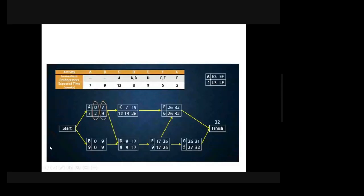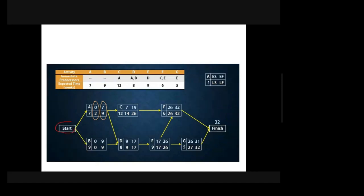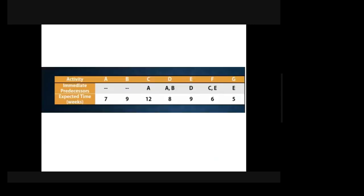These network diagrams look something like this. Here you can see each of them has a start point, there is a node, and this node has various attributes. These are various activities basically that are happening, and each of them has various attributes in terms of numbers. There are some interdependencies between activities, and then there is a finish. This is essentially how a network diagram looks like, and we are going to discuss them in detail.